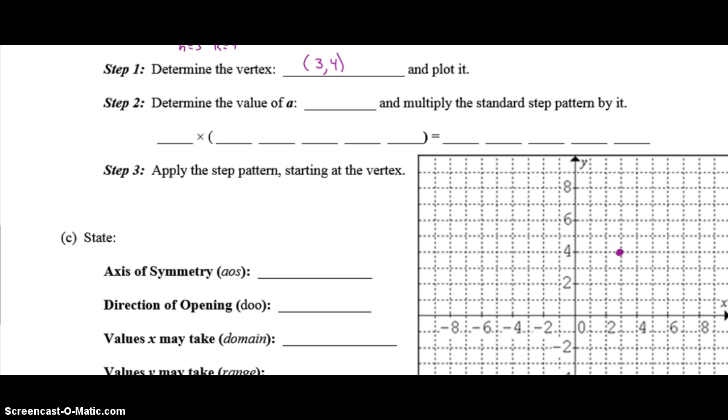Now, the value of A is negative 2. What you want to remember is that your parent step pattern is always multiplied by the A value. So 2 times 1, 2 times 3, 2 times 5, etc. Your new step pattern is negative 2, negative 6, negative 10, negative 14, and negative 18. These steps are made from this vertex.